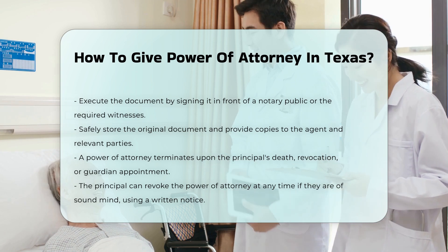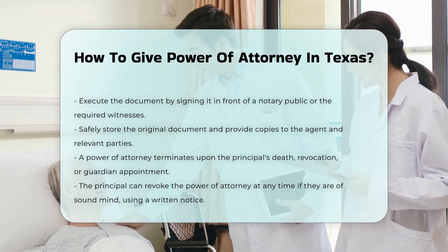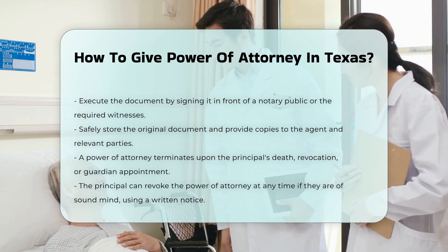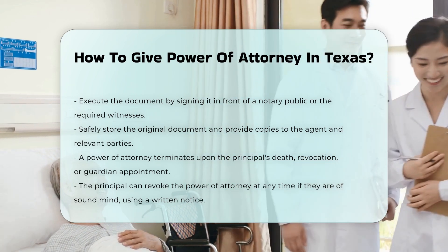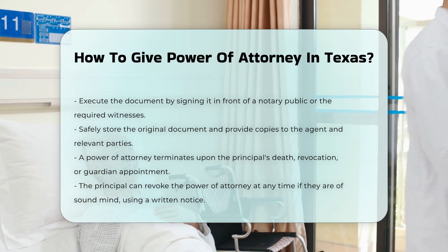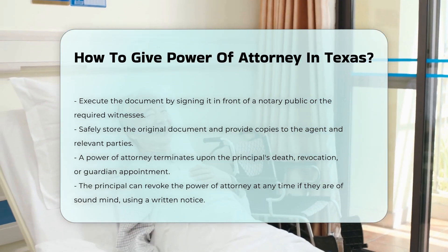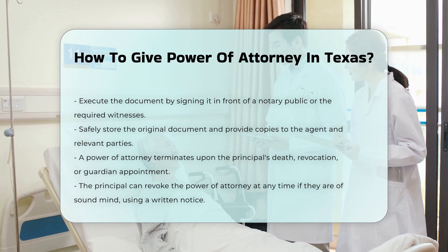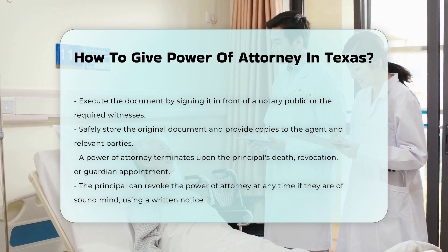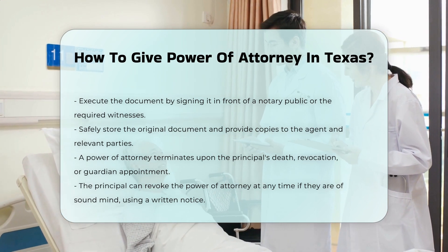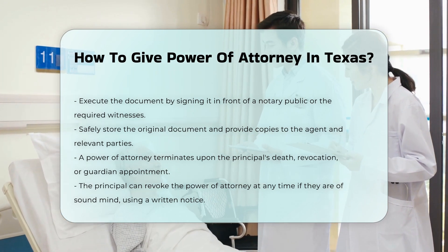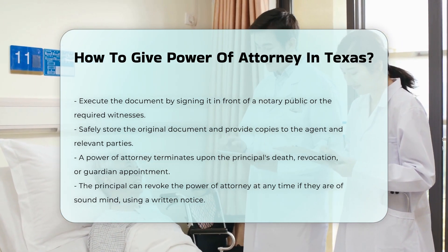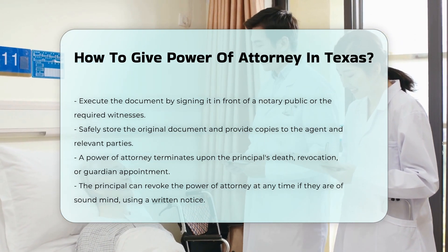Important considerations. Termination: a power of attorney ends upon the principal's death, revocation, or appointment of a guardian. Revocation: the principal can revoke the power of attorney at any time, provided they are of sound mind, by doing so in writing.